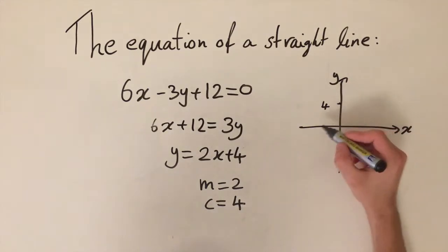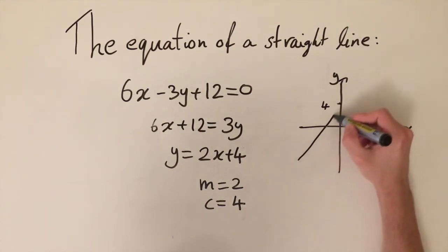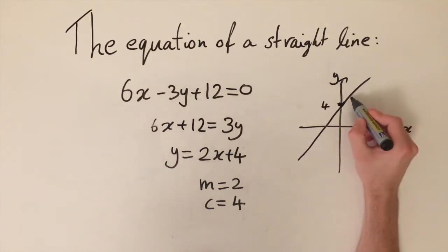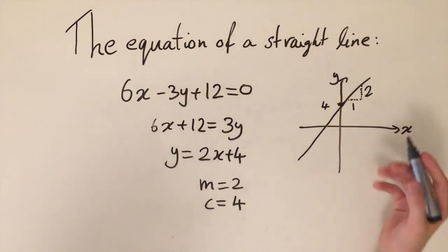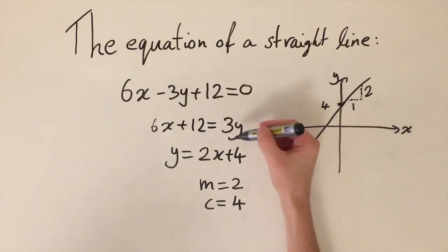So the line is just going to look something like this, going through the y-intercept of 4 and it's got a gradient of 2. So if we go to the right starting at any point, if we go to the right by 1 unit, then we're going to have to go upwards by 2 units. And this gives us a sense of how steep the line is. So this is what this original equation looks like on the plane.